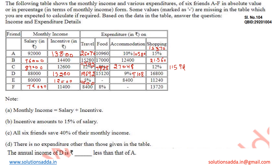Hello everyone, this is question number 4. This question asks that the annual income of D is how much less in rupees than that of A. So basically we have to find out the annual income of D and then calculate how much this amount is less than the annual income of A.